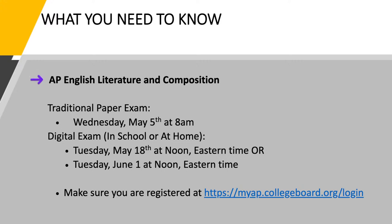We're talking about the AP English Literature exam, not to be confused with the Language exam, which is a different one. You may be taking the test on one of three dates. You might be taking it on Wednesday, May 5th. If that's the case, you'll be taking a traditional paper and pencil test. You'll bubble in your answers on a bubble sheet, and someone will score your bubble sheet with a computer and score your handwritten essays. That's the same as the AP exam that everyone took two years ago.